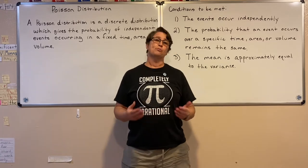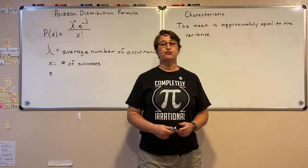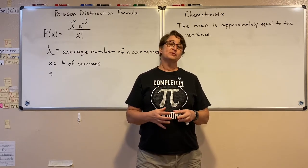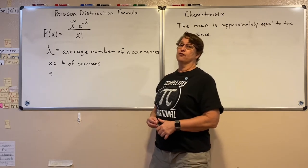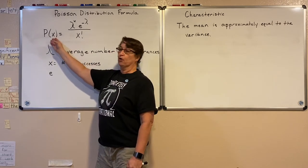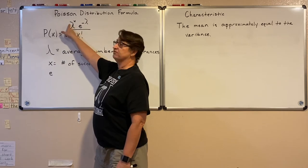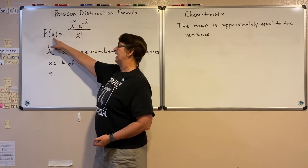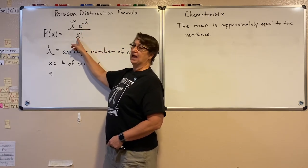So there's a little introduction to the Poisson distribution. Let's look at the formula. The Poisson distribution shows the probability that an event occurs over a specific time, area, or volume. The formula is: probability equals lambda raised to the x value times e raised to the negative lambda, all divided by x factorial.